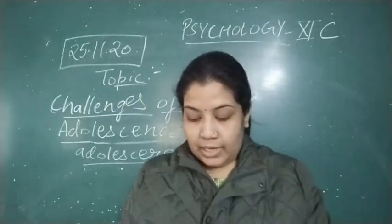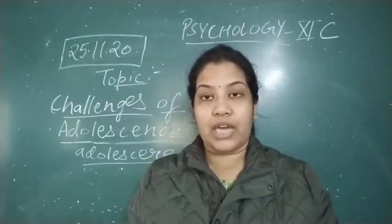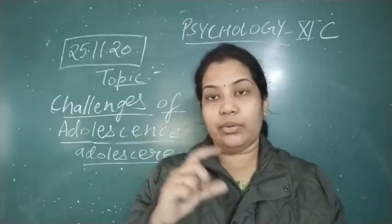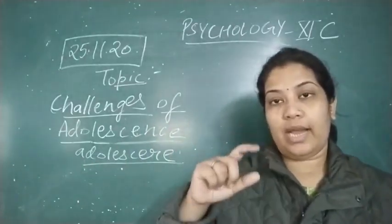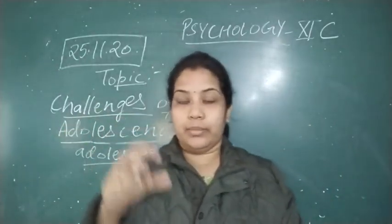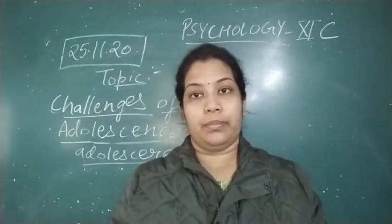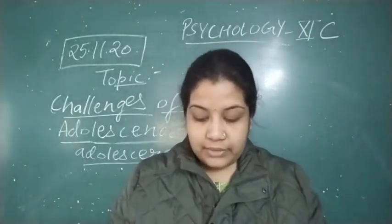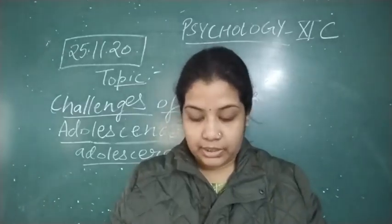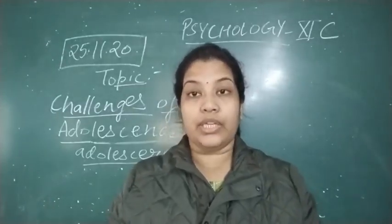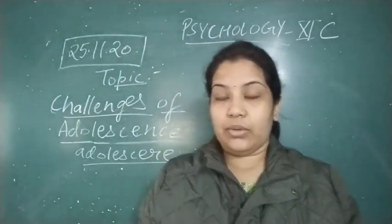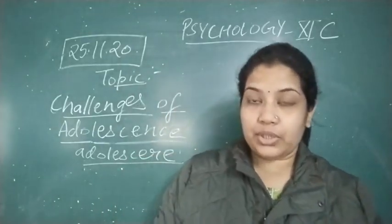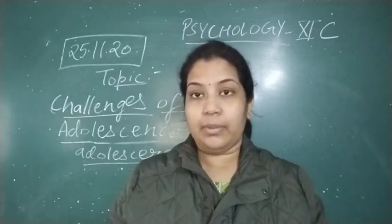Adolescence is a transition period in a person's life from childhood to adulthood — this stage is between childhood and adulthood. Adolescence is commonly defined as the stage of life that begins at the onset of puberty, when sexual maturity or the ability to reproduce is attained. We can define adolescence by the name of sexual maturity and when the person will be able to reproduce.